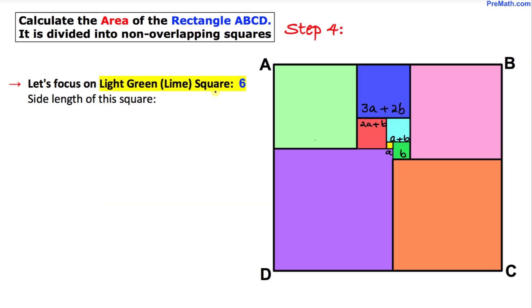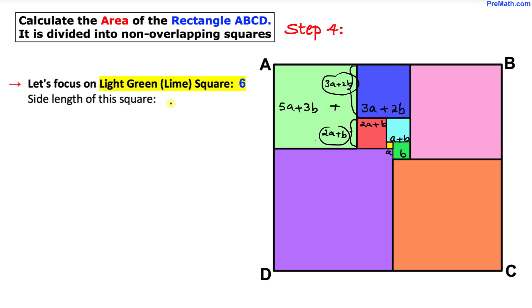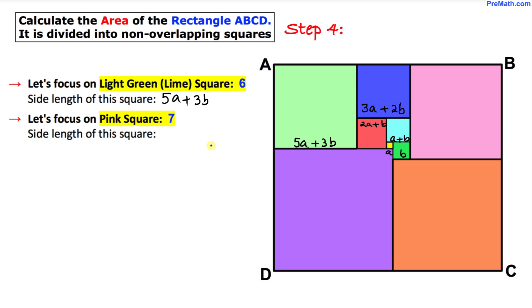Now let's focus on this lime green square. We know the side length of the blue square is 3a plus 2b, and the side length of the red square is 2a plus b. If we add these two lengths we get 5a plus 3b. So the side length of this lime green square is 5a plus 3b.